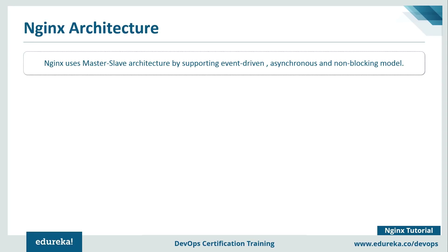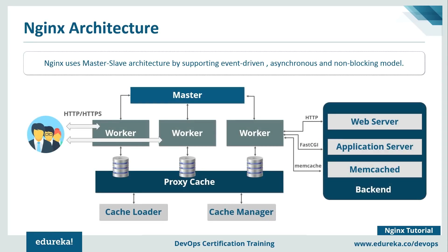Nginx mainly uses a master-slave architecture, which supports an event-driven, asynchronous, and non-blocking model. Traditional process or thread-based models handle concurrent connections by spawning a separate process or thread per connection and blocking on network or I/O operations. For a large enterprise with many web pages, this can be very inefficient in terms of memory and CPU consumption.